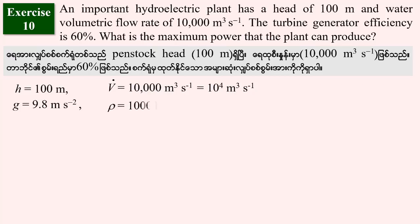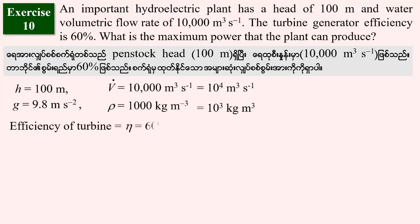Using g = 9.8 meters per second squared and an efficiency of 60%, we can calculate the power output.